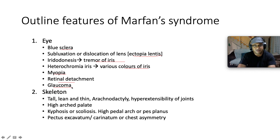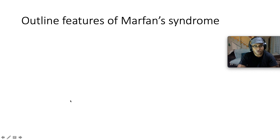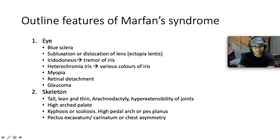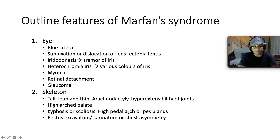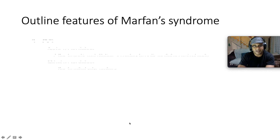Skeletal features of Marfan syndrome: patients tend to be tall, lean, and thin with arachnodactyly and hyperextensible joints. They have a high arched palate. They may have kyphosis or scoliosis, a high pedal arch or pes planus. They may have pectus excavatum, carinatum, or chest asymmetry.